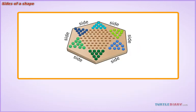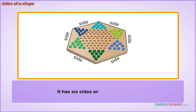You are playing Chinese checkers with your friends. You look at the board and see that it has six sides. You know it is a hexagon.